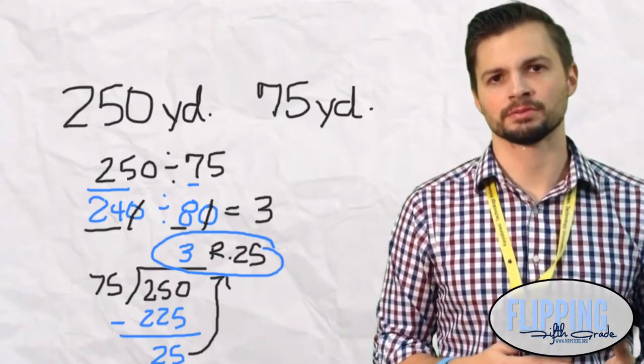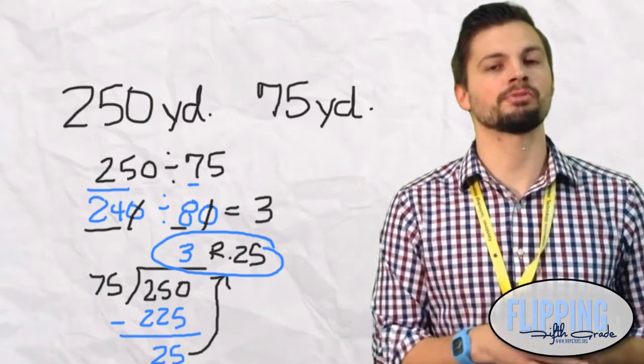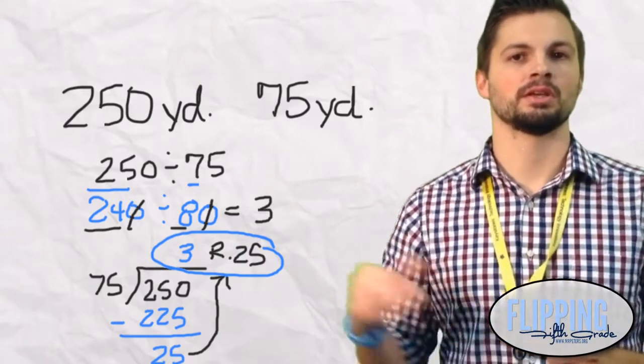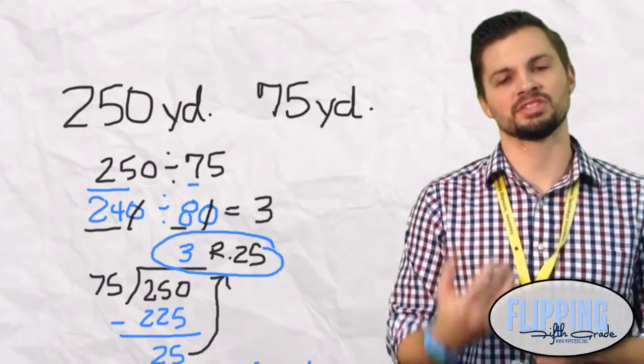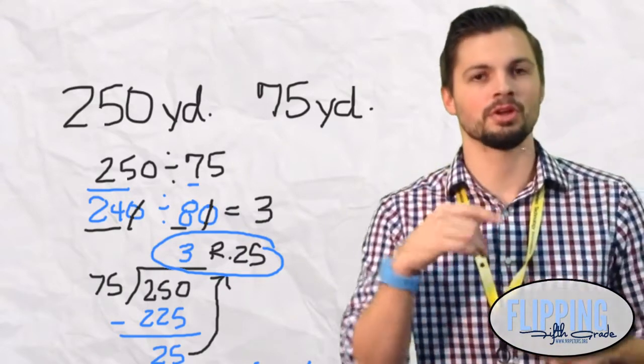How many packs should we have? If you said 3, you would be incorrect because you have a remainder of 25 that you still need. So you would have to buy 4 packs. Remember that is called using reasonableness.